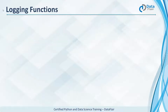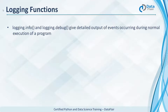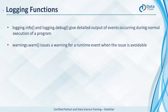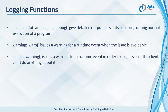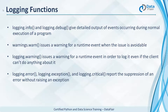Let's learn about different functions related to logging. Info and debug give a detailed output of the events and these events occur during normal execution. Though when there's a warning, the warn function logs a warning in the log file, but this is when the issue is avoidable. The warning function issues a warning for a runtime event to log it even if it is such that the client cannot do anything about it — this message it logs has the severity warning. Error, exception, and critical log an error with the error severity.